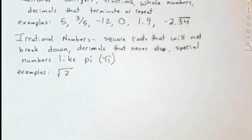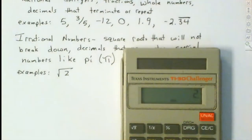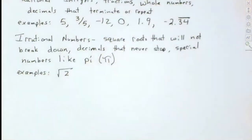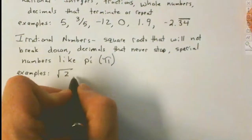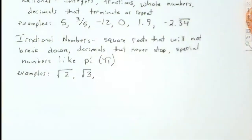If we take the square root of 2 in our calculator, it doesn't come out to be a whole number — it goes on forever. If it's a decimal that never stops, it's an irrational number. 2 doesn't break down. Now if I had said 4, the square root of 4 is 2, and it would have been rational. Square root of 3 is also an irrational number.